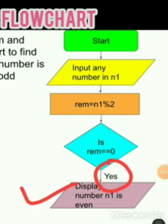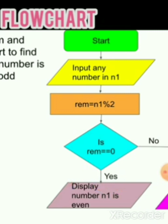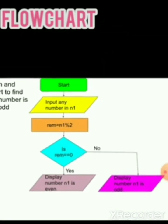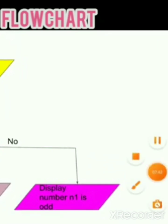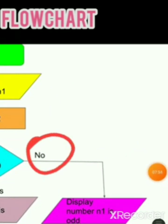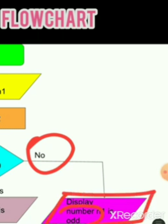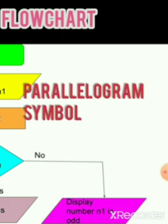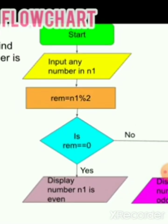If the condition is 'Yes' (remainder == 0), it displays 'number is even.' If the condition is 'No,' it displays 'number is odd' because 7 was not divisible by 2. For output display, you use the parallelogram symbol — the same symbol used for input and output.